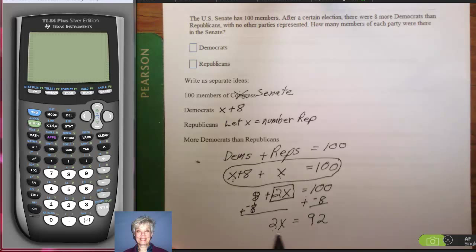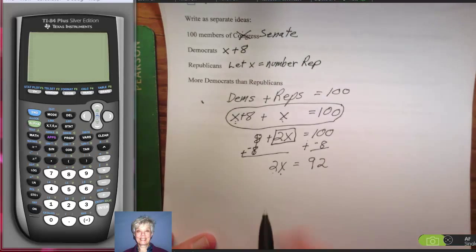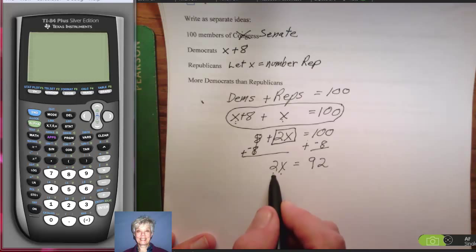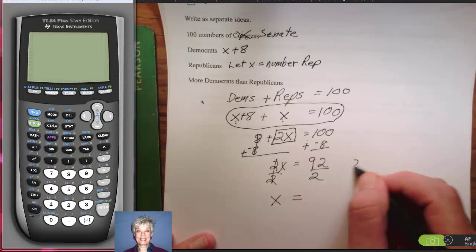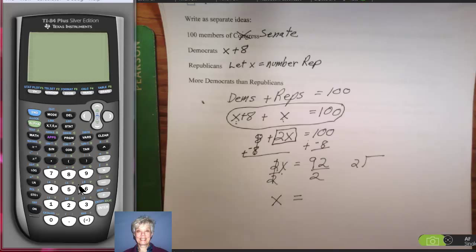Now, I have one variable term on the left, one constant term on the right. We call pure numbers constants. Let me move this now. 2 is multiplied by the X, and so to get rid of that 2 and just get X by itself, I'm going to do the opposite of multiplication, which is division. This will leave me with X on the left, and I've got to divide 2 into—I've got my calculator. Why don't I use the calculator? I'm going to come over here and turn it on, and say 92 divided by 2, enter, is 46. So X equals 46.